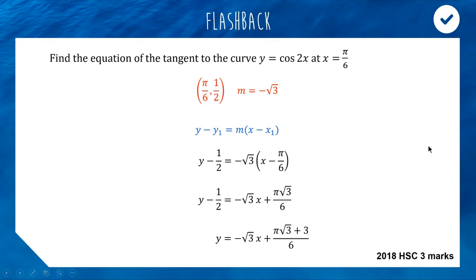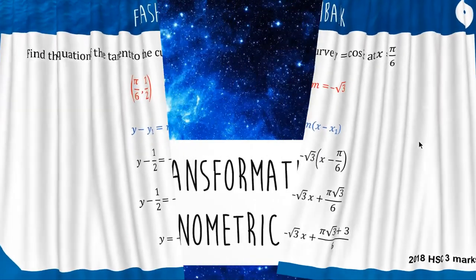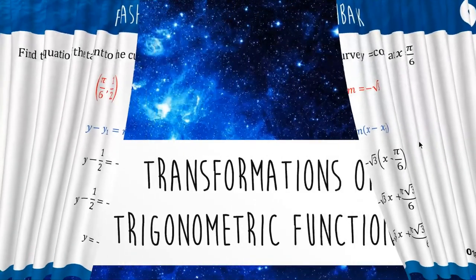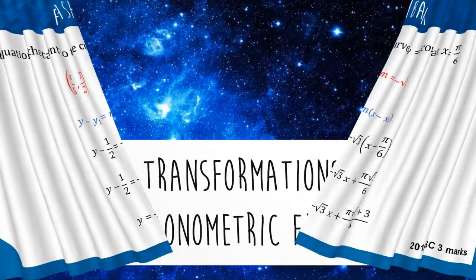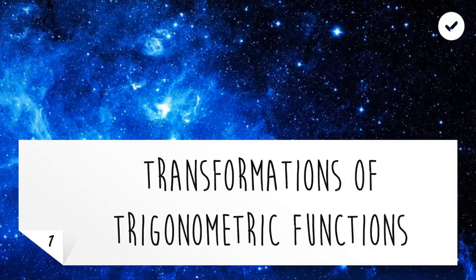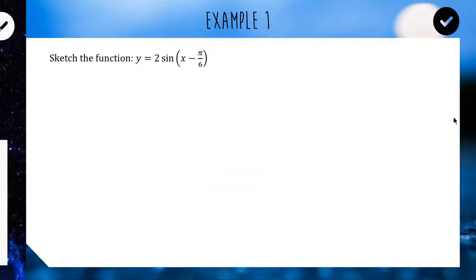Well done if you got something looking similar to that. Today we're starting with a recap of all the graphing techniques we looked at in the trig topic, so we're going to call this one 'Transformation of Trigonometric Functions.' Our first one: sketch the function y equals 2·sin(x − π/6).